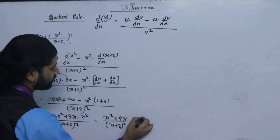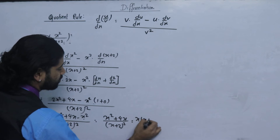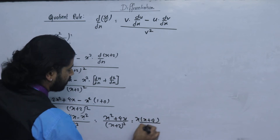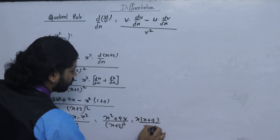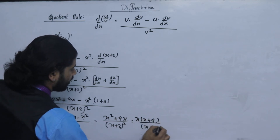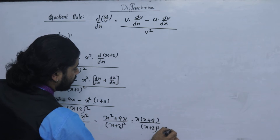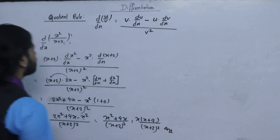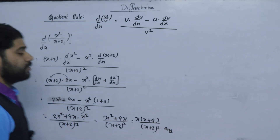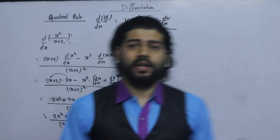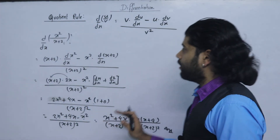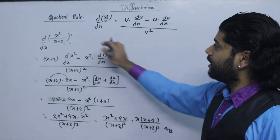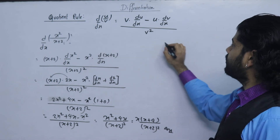So the result is x squared plus 4x upon (x plus 2) squared. We have used the quotient rule to solve this problem. Next, we will do the second example.